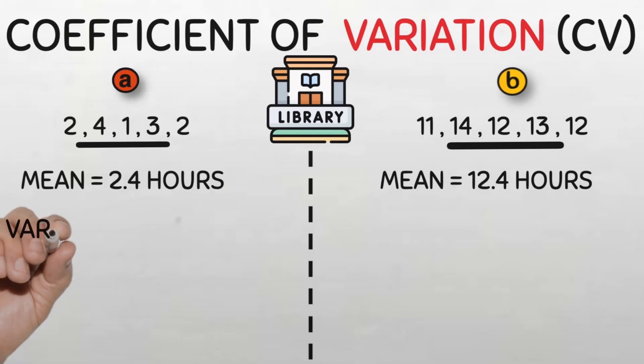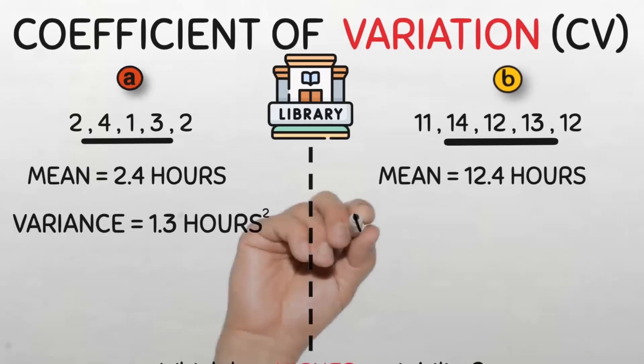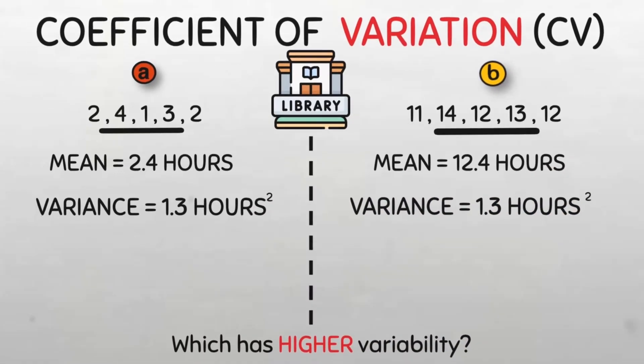So let's try the variance. Surprisingly, when I computed the variance, it turns out that they both have the same variance — 1.3 hours squared. This means that the spread or dispersion of the data points around their respective means is the same in both data sets, using variance as our measure of dispersion. This doesn't sound right. In our mind, we know that these data points are different. But why is the variance measuring the same?